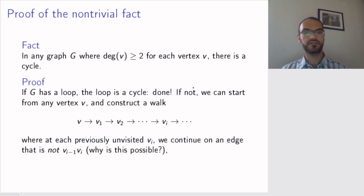If G doesn't have a loop, we start from a vertex and we construct a walk in the following way. At each vertex we come to, where we have not been before, we go out on a different edge than the one we came in on.